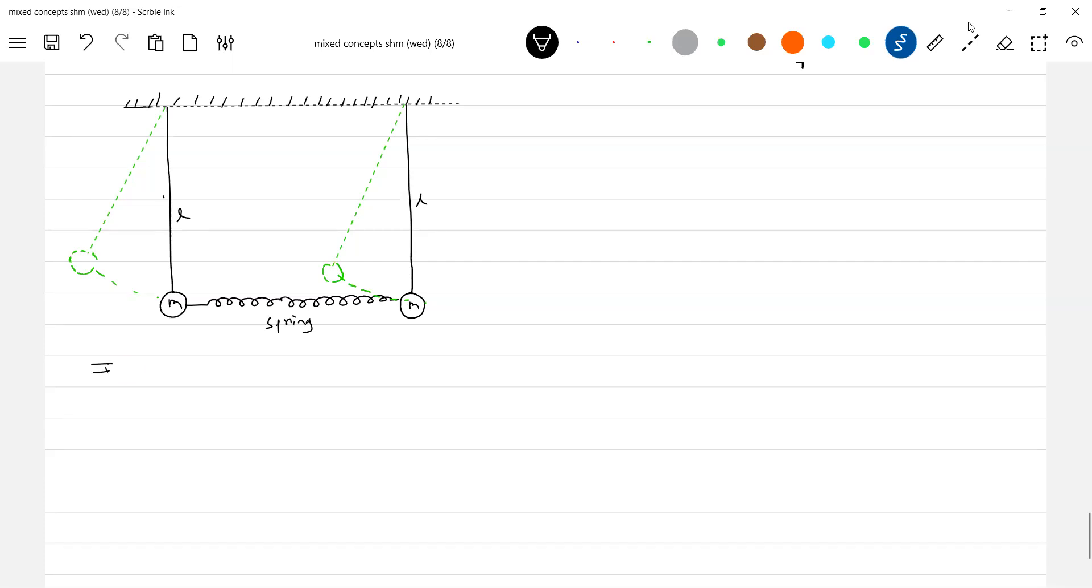First we'll write: Find T if both pendulums - there's a string and the bobs are connected by a spring. If both pendulums oscillate in phase or in same direction, the diagram itself is speaking. Both will have the same motion. I'll give one more diagram.